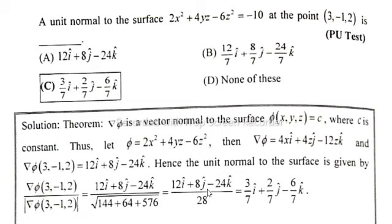So gradient φ at the point (3, -1, 2): First, 4×3 = 12, 12i unit vector. Next, the z value is 2, so 4×2 = 8, 8j. Minus 12×2 = 24, 24k unit vector.